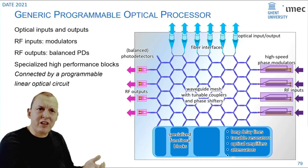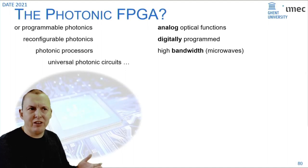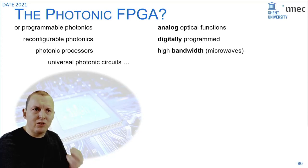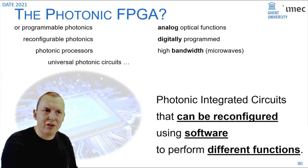Does that give us something generic enough that we could call it something like a photonic FPGA? People have been coining different names for this, but essentially what you have is analog functions that can be programmed in a digital way by adding electronics, but that can also process really high bandwidth signals like microwaves. Where we're going with this technology is photonic integrated circuits that can be reconfigured in software to perform a variety of functions.